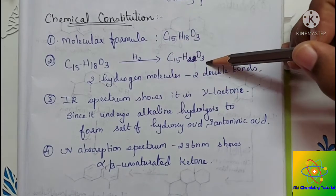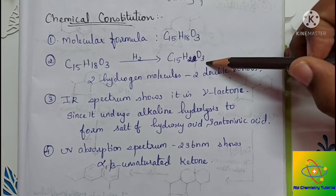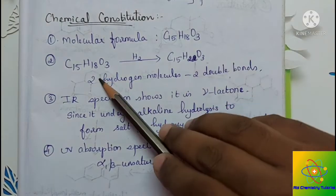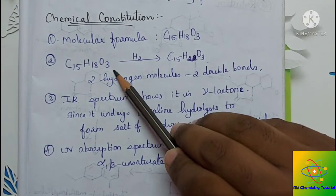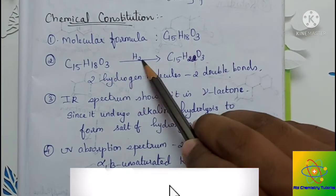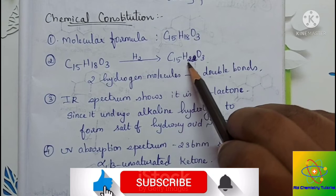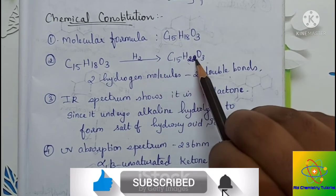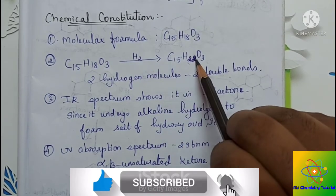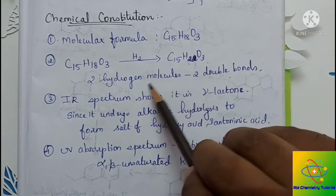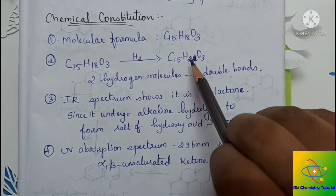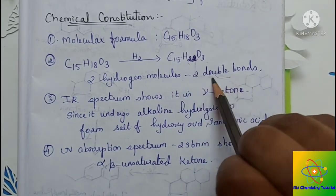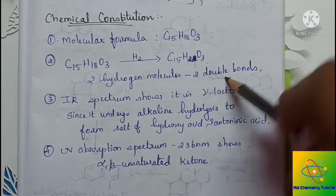The second step is the addition of hydrogen, that is reduction. When we reduce alpha-santone, it absorbs 2 molecules of hydrogen to form the reduced product with 4 additional hydrogen atoms. This means 2 double bonds are present in alpha-santone.